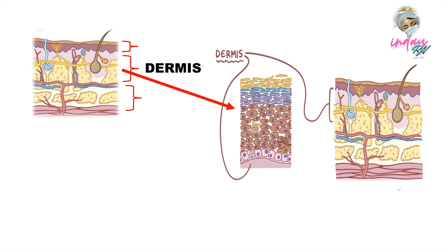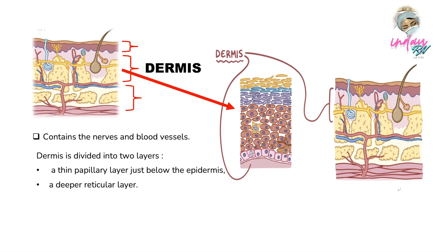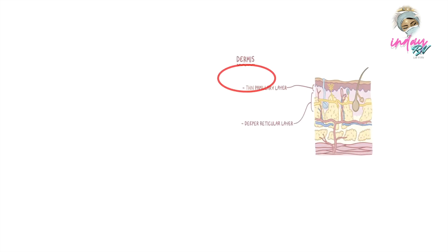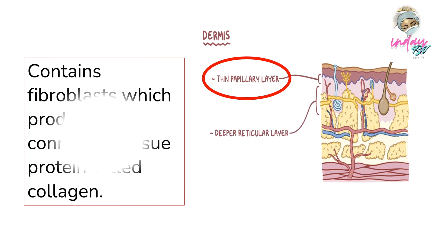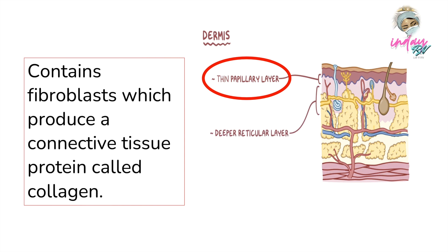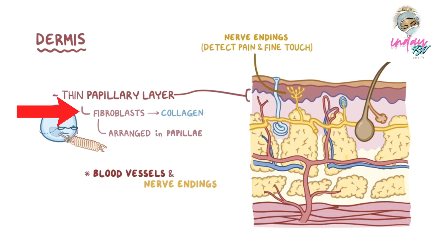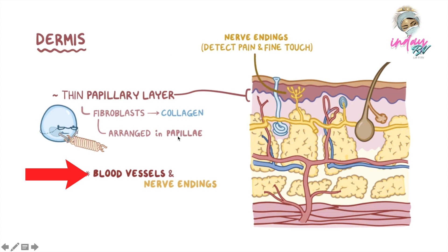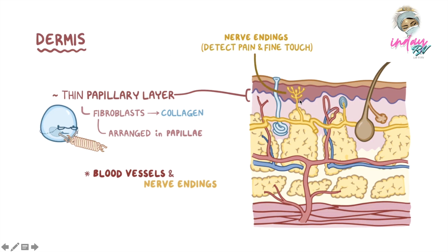Underneath the epidermis is the thicker dermis layer that contains nerves and blood vessels. The dermis is divided into two layers: the thin papillary layer just below the epidermis and a deeper reticular layer. The papillary layer contains fibroblasts which produce collagen, arranged in finger-like projections called papillae, each containing blood vessels and nerve endings that send pain and fine touch sensations.